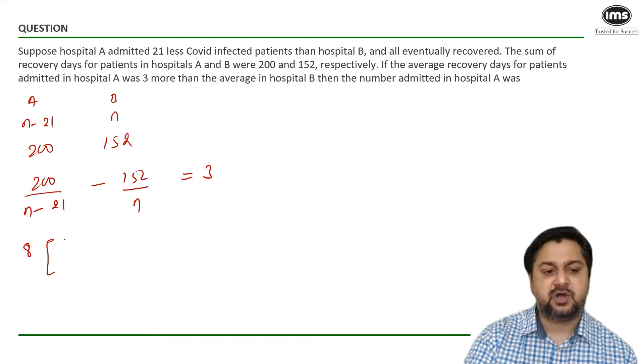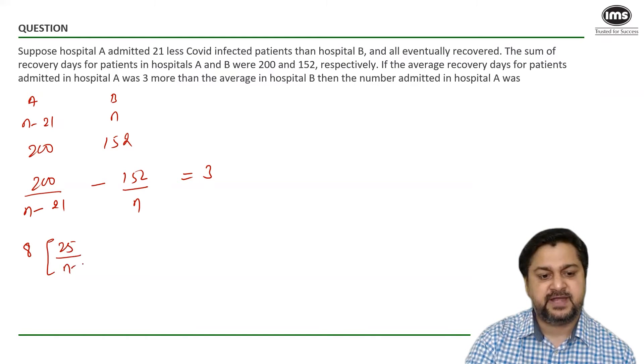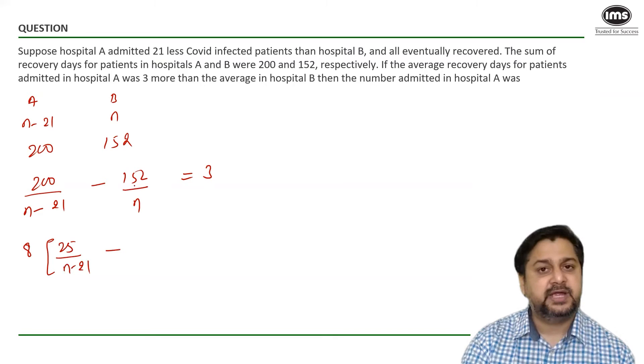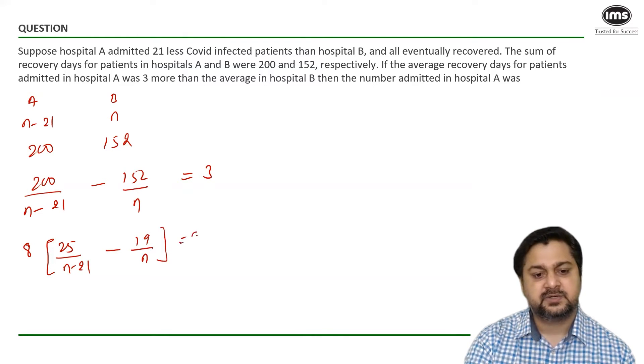So if I take 8 common from 200 it would make it 25 and we would have N minus 21 and I know 8 times 19 is 152. So this is 19 by N. This is equal to 3.